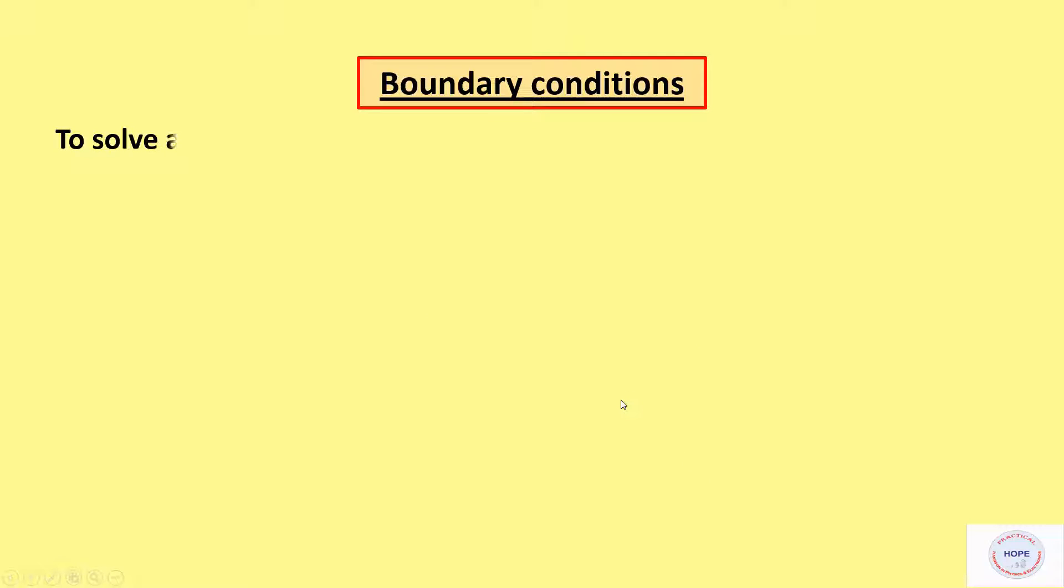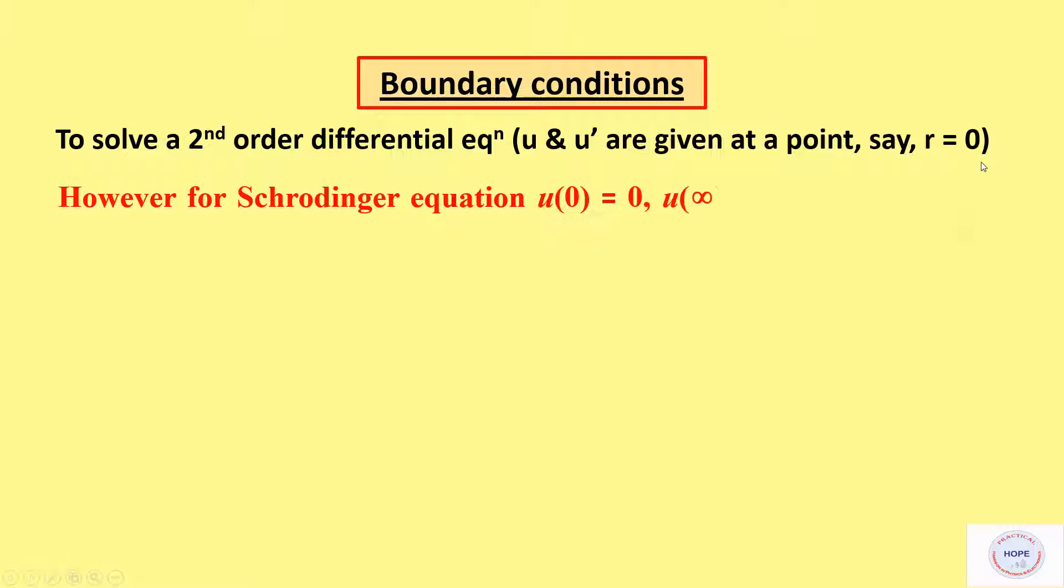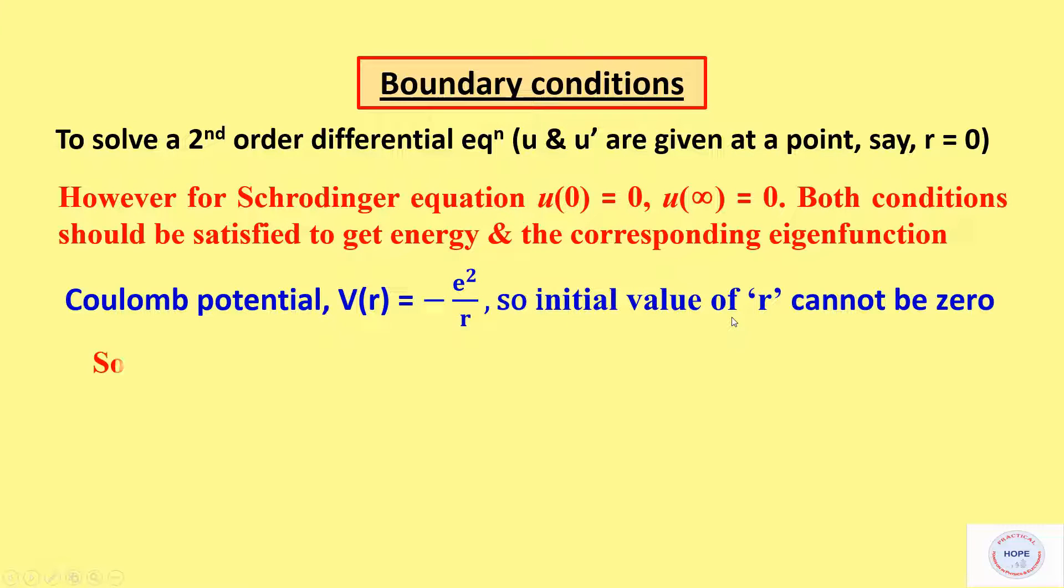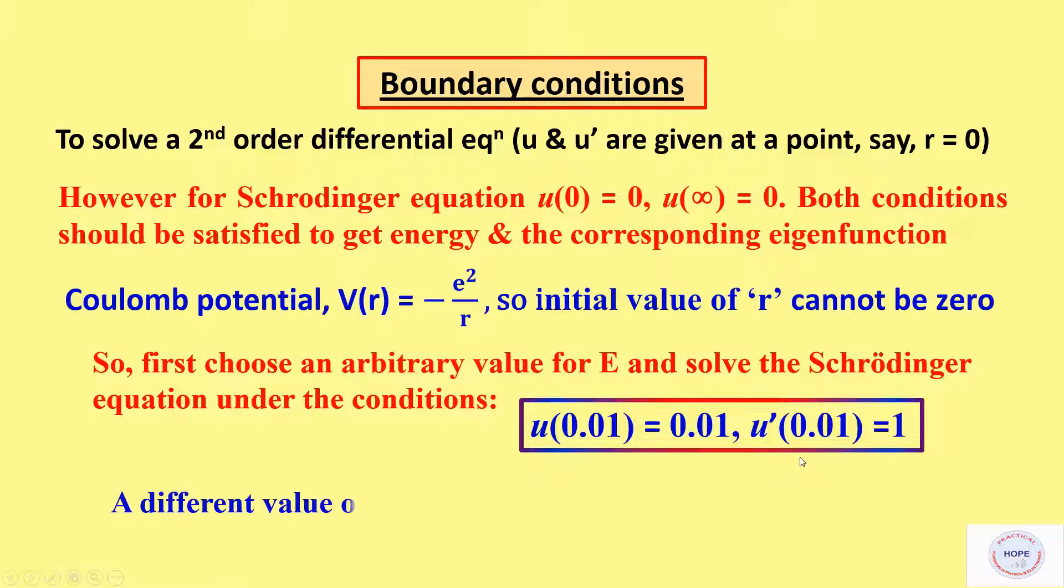Now to solve a second order differential equation, we require one point condition, that is the value of u and u prime should be specified at some value of r say 0. However, Schrödinger equation has to be solved under two point boundary conditions. That is u should be 0 at both r equal to 0 and r equal to infinity. Hence both conditions should be satisfied to get the energy eigenvalues. r cannot be 0 since Coulomb potential will become infinite at that point. So first choose an arbitrary value of energy E and solve the Schrödinger equation under the conditions. At r equal to 0.01, u should be 0.01 and u prime equal to 1. U prime is chosen to be 1. A different value will only change the scale of the wave function.